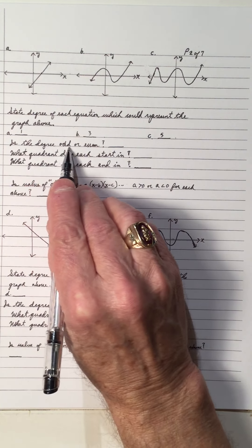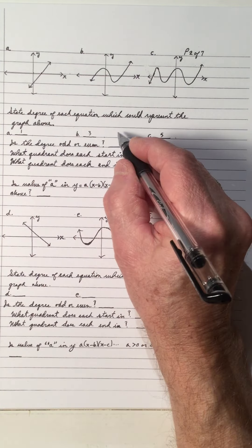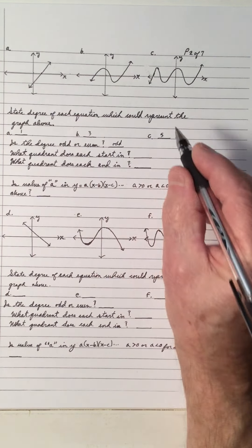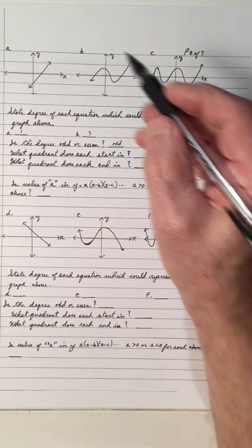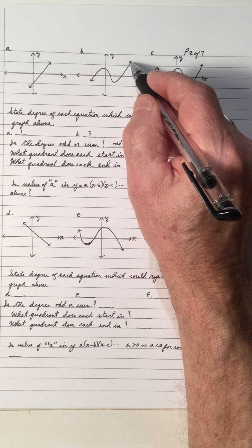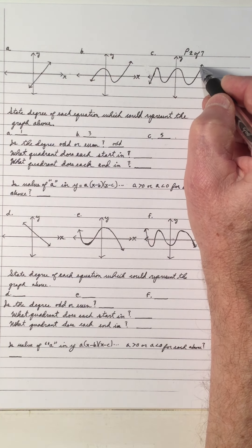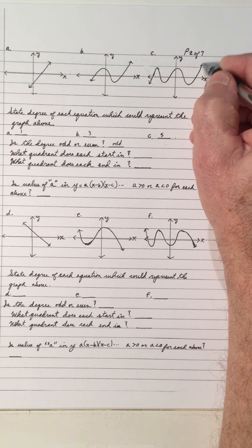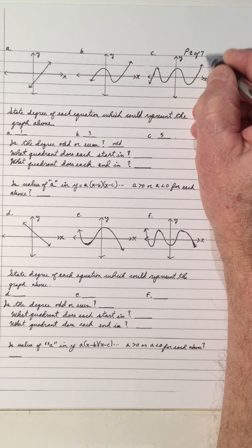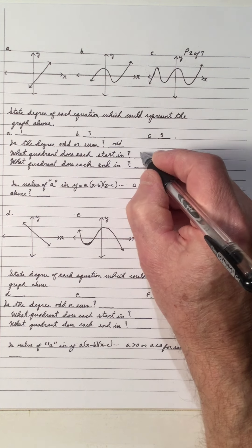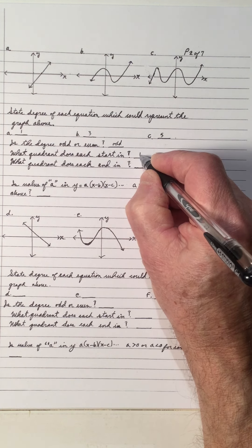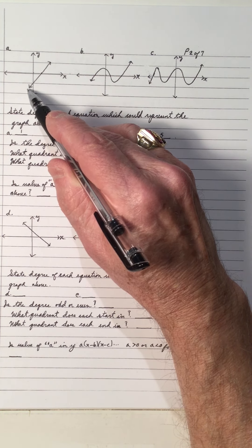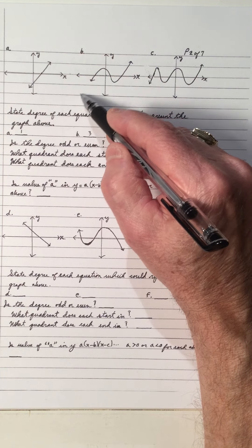Is the degree odd or even in each of these? The degree is odd, because there are odd numbers: one, three, and five. What quadrant does each start in? Each starts in quadrant one — as x goes to infinity, y goes to infinity. And what quadrant do these end in? They end in quadrant three, going down.